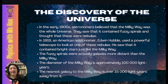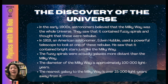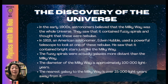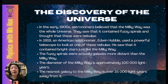Let's first learn about the discovery of the universe. In the early 1900s, astronomers believed that the Milky Way was the whole universe, because that was the extent of what we could see. They saw fuzzy spirals and thought these were nebulae. In 1919, American astronomer Edwin Hubble used a powerful telescope to look at one of these nebulae and saw that it contained bright stars just like the Milky Way. The fuzzy spirals were actually galaxies even more distant than the Milky Way. The diameter of the Milky Way is estimated at approximately 100,000 light years across, and the nearest galaxy is over 25,000 light years away.